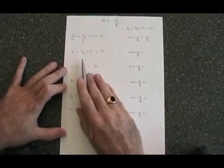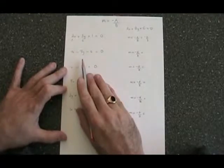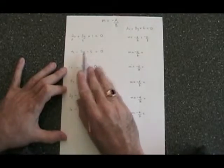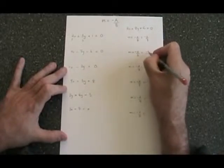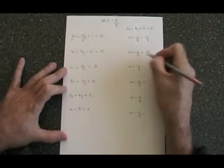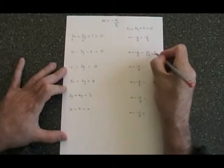The second line is already in the form ax plus by plus c equals zero. The a is four, the b is negative seven. So negative a over b becomes negative four over negative seven. The two negative signs cancel, and our slope is four-sevenths.